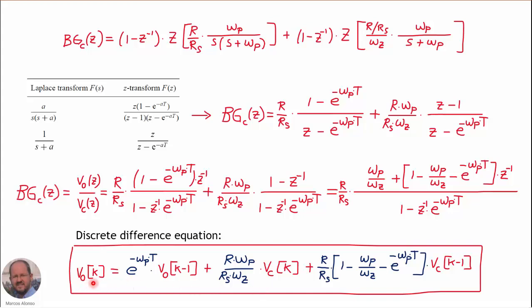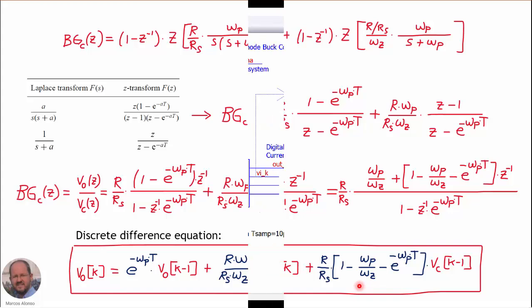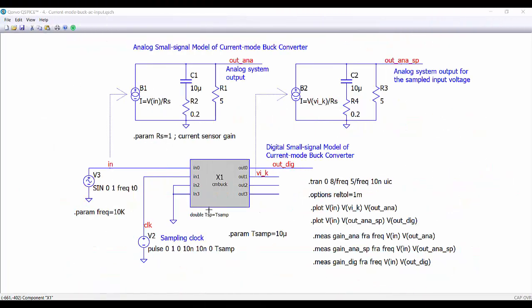This is the discretized operation of our buck converter in current mode. Now we are going to do a QSPICE simulation to verify that this discretization is correct. The discretized system is implemented with a C++ module in QSPICE.